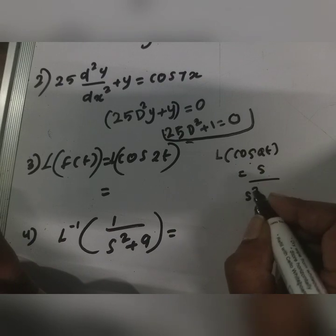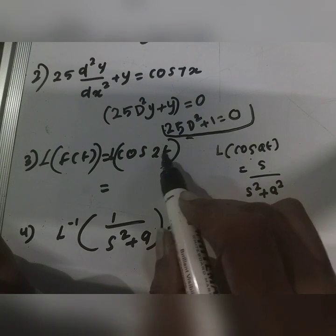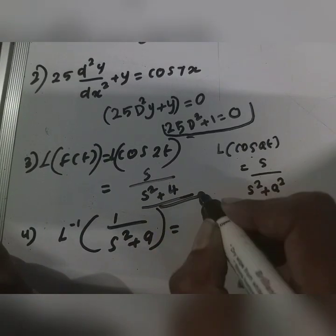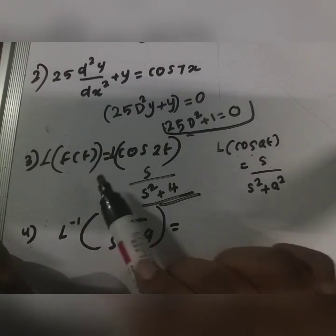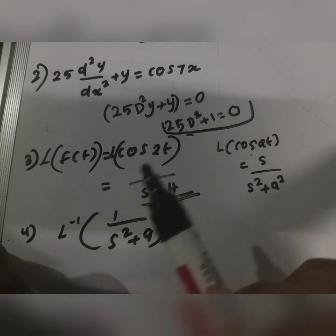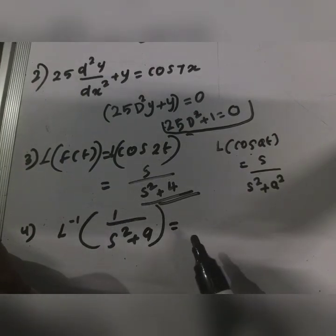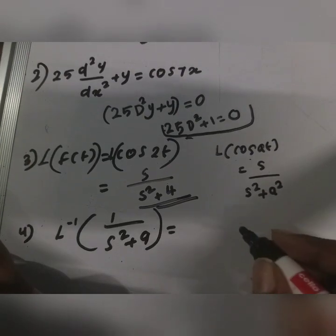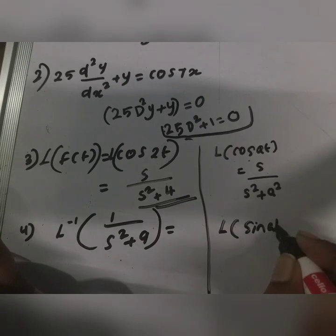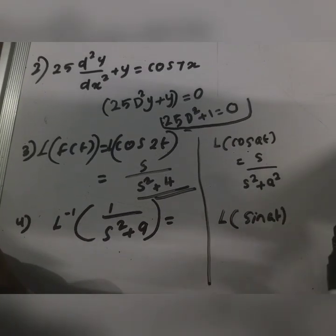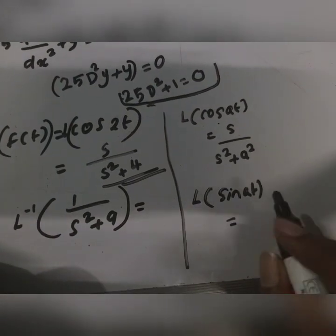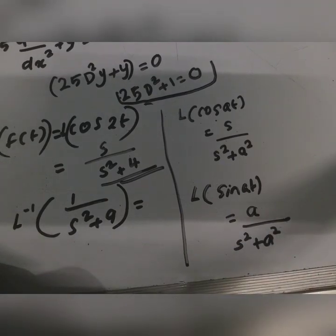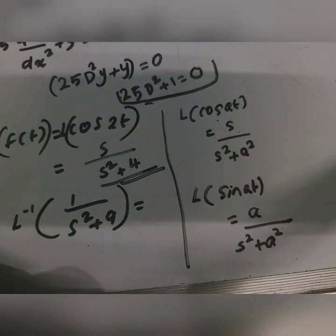The formula is s by s squared plus a squared. For this equation, a equals 2, so the answer is s by s squared plus 4. Now we have to look at the inverse Laplace. Looking at the denominator, we identify a squared equals 9, so a equals 3.